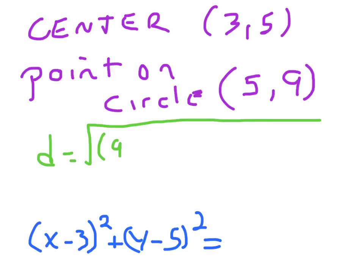So it's going to be 9 minus 5 squared plus, then the x is 5 minus 3 squared. 9 minus 5 is 4 squared plus 2 squared. So we have a 16 and a 4. So that comes out to be 20.